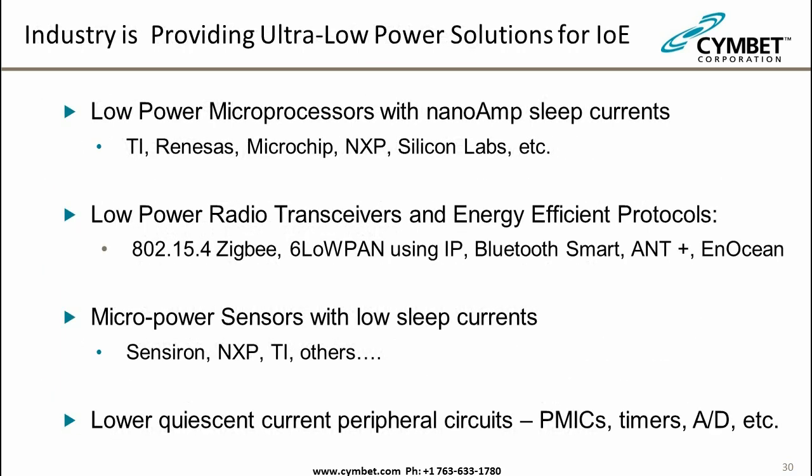The industry is providing ultra-low power solutions across all areas. We're seeing breakthroughs in ultra-low power microcontrollers with nano-amp sleep currents. Low-power radio transceivers and energy-efficient protocols are advancing — the 802.15.4 variants, 6LoWPAN providing IP-type services, Bluetooth Smart ramping quickly, and ANT+ and similar protocols. Micropower sensors are also improving: Sensirion has nice devices, NXP has CMOS sensors, TI has very low power Hall effect sensors. Power management ICs, timers, and ADCs are all becoming ultra-low power.